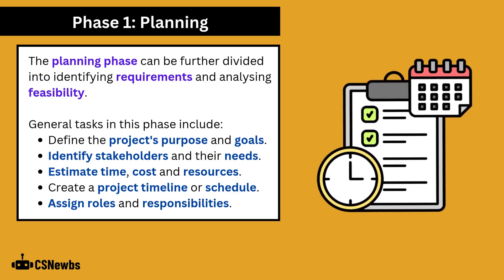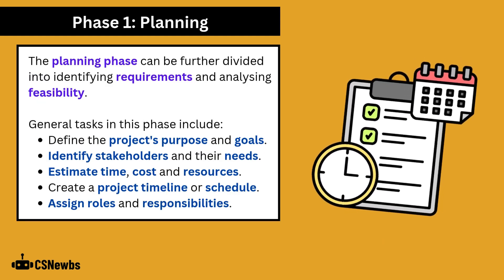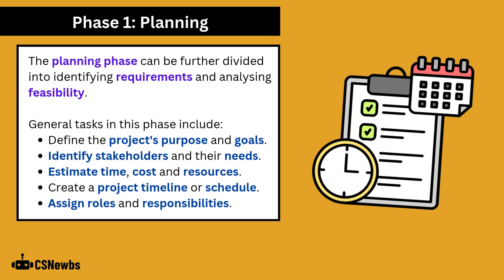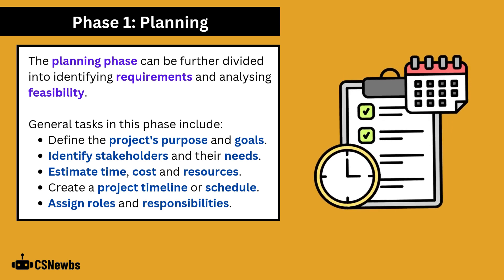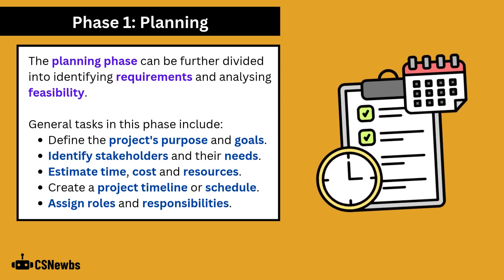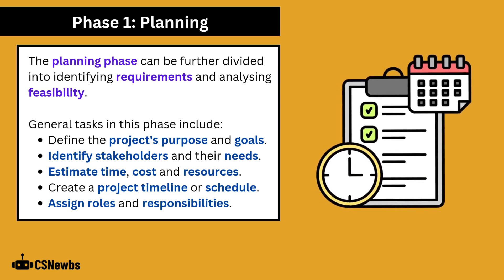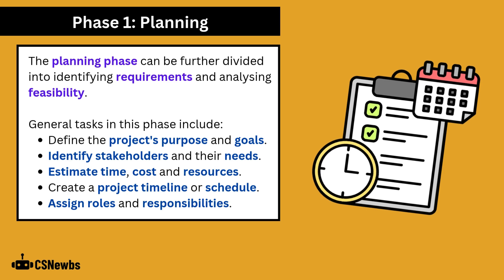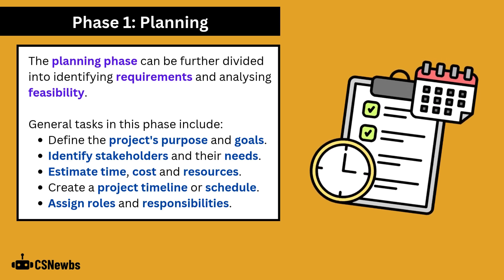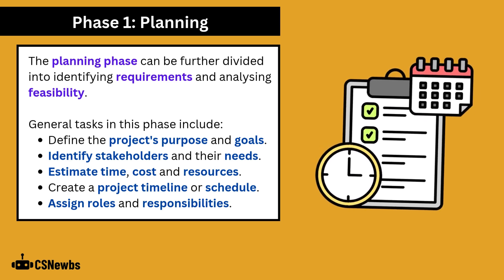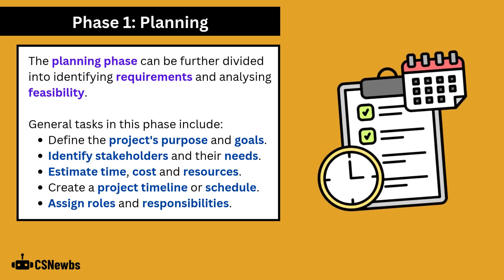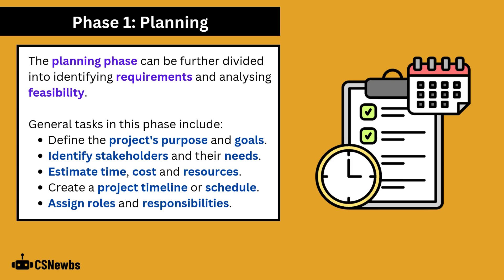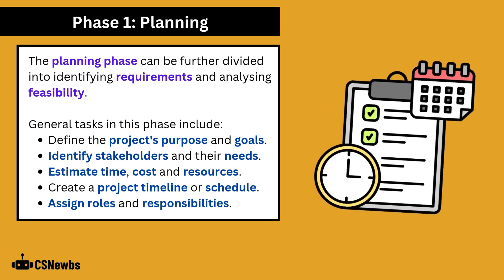The planning phase can be further divided into identifying requirements and analyzing feasibility. General tasks in the planning phase include defining the project's purpose and goals, identifying stakeholders and their needs, estimating time, cost and resources, creating a project timeline or schedule, and assigning roles and responsibilities.